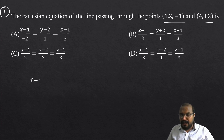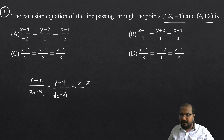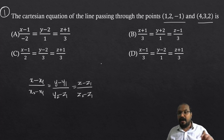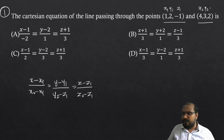The line passing through (x1, y1, z1) and (x2, y2, z2). There are two points. We take x1, y1, z1 and x2, y2, z2 as our two given points.